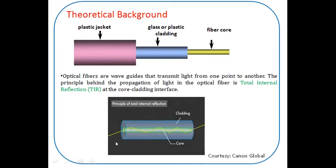I will explain with the help of this diagram. When a light ray is launched into the core of an optical fiber, it undergoes total internal reflection and reaches the destination point, transmitting the data. The angle of incidence at the point of entry will be greater than the critical angle, and it transmits the data completely without any loss.